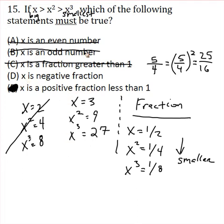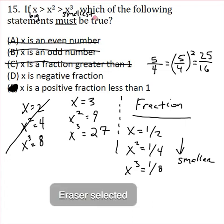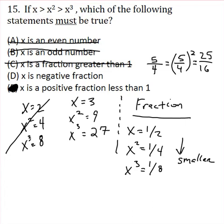A negative fraction—well, what we can do is, let me just put the eraser on, but if we pick a negative fraction, let's not even pick a number. Let's actually just put in the signs. So if you've got a negative number, what happens when you square it?